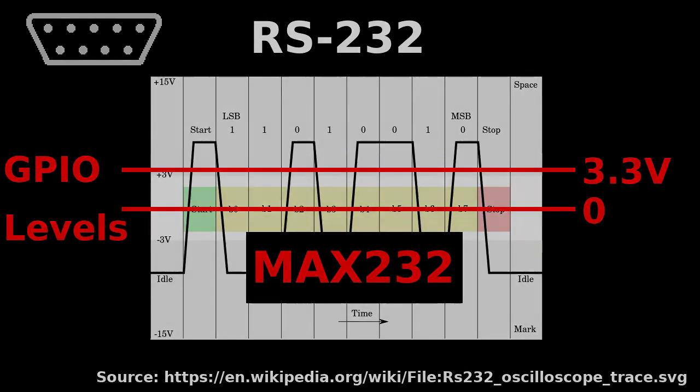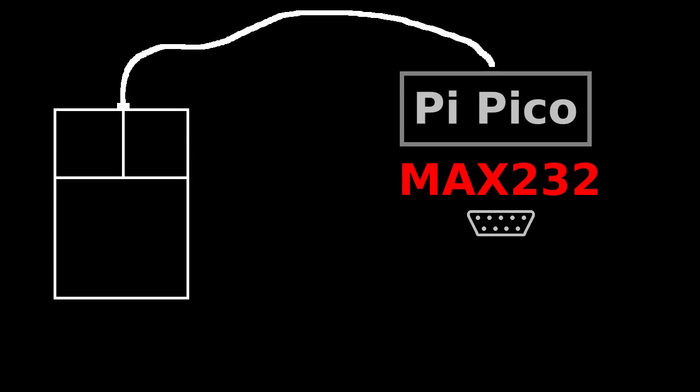Okay, this sounds fairly straightforward. We just need to connect a Max 232 IC to the Pico, then the Pico to the USB mouse and we're done, right? Well, it's not so easy.